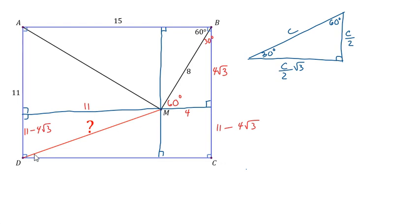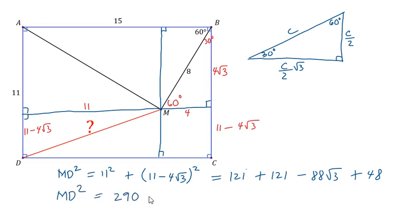We can easily find the length of MD using the Pythagorean theorem. So we have MD squared equals 11 squared plus the square of 11 minus 4 square root of 3. This is equal to 121 plus 121 minus 88 square root of 3 plus 48. So we have MD squared equals 290 minus 88 square root of 3. And finally, we have MD equals the square root of 290 minus 88 square root of 3. And that's our final answer.